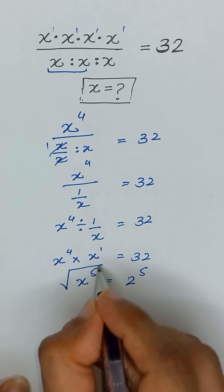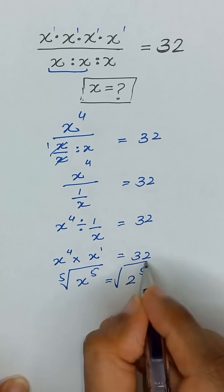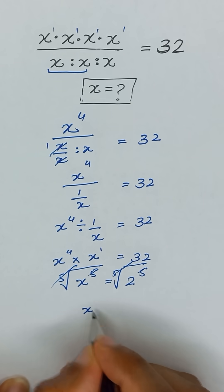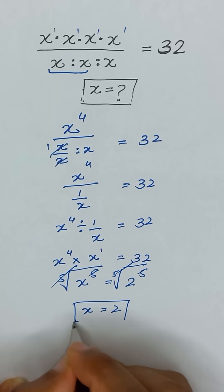If we take the 5th root on both sides, it cancels out, and the value of x equals 2. Thanks for watching.